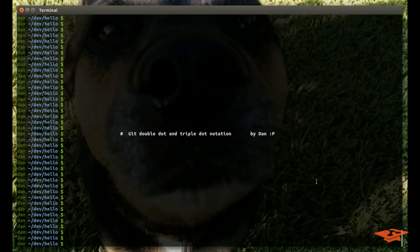Hey everybody, it's Dan once again with another git tutorial video. Today we're going to be talking about git double dot and triple dot notation. So let's clear the screen and get started.